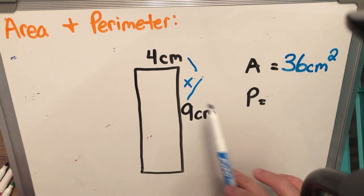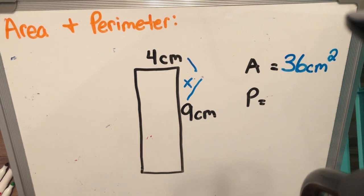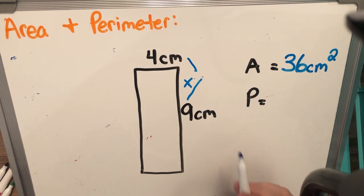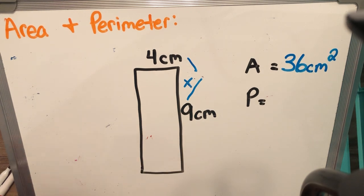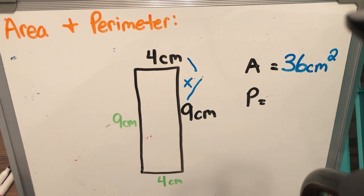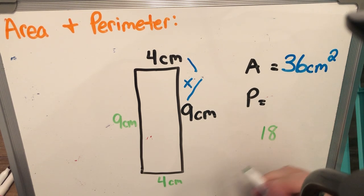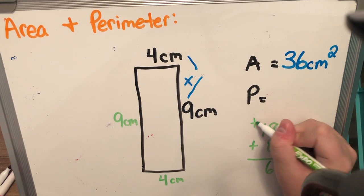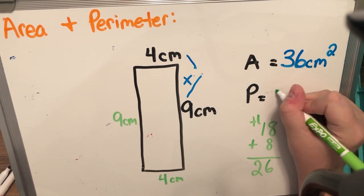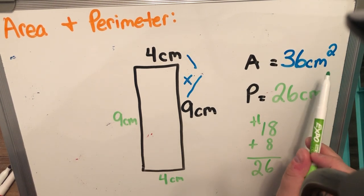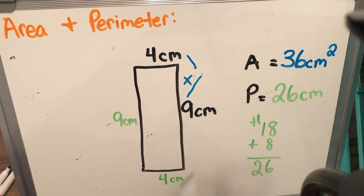The reason we use squared is because you are multiplying two sides, and when you multiply two sides it's called a square unit — so we stick that little two right above the last label. Now for perimeter, I'm going to add the opposite sides. Nine plus nine is 18, and four plus four is eight. So I add 18 plus eight: carry the one, and I get 26. My perimeter is 26 centimeters. You do not need the squared symbol for perimeter — you only use squared when finding area.